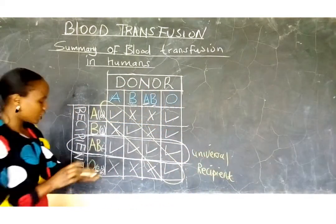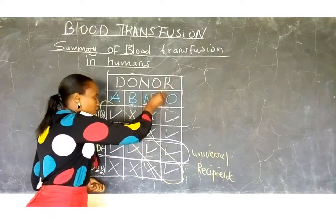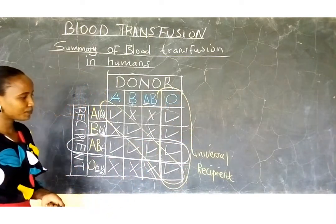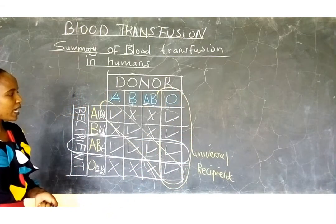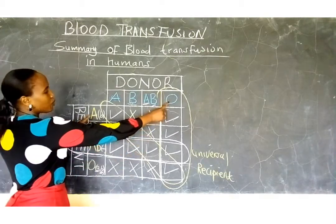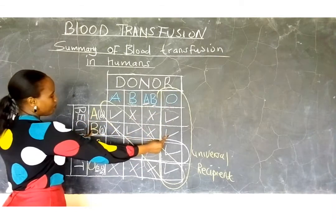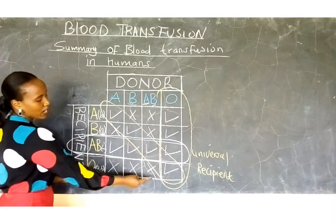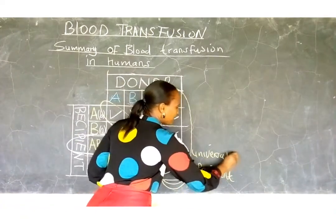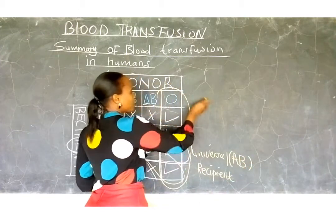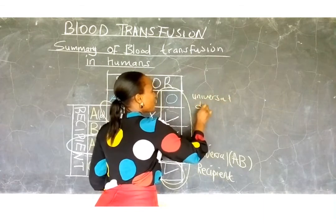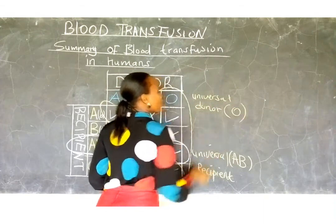Looking further, persons with blood group O can donate blood to all four blood groups — to blood group A, blood group B, blood group AB, and blood group O. So the universal recipient is blood group AB, and people with blood group O are known as universal donors.